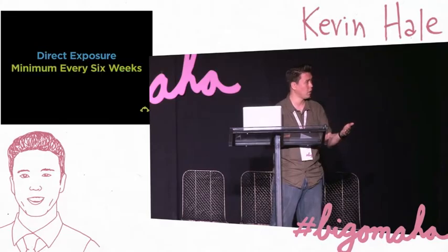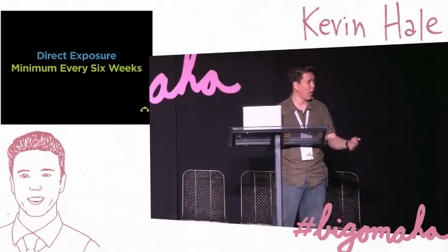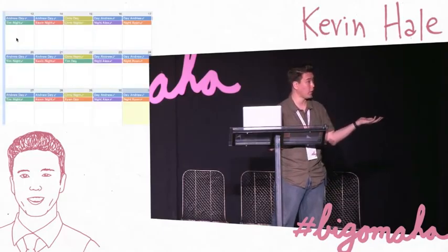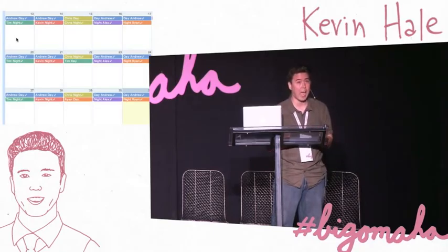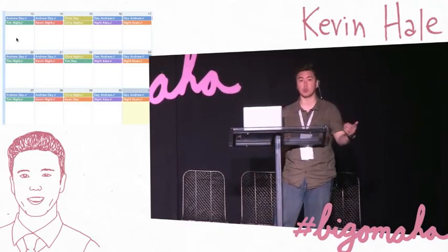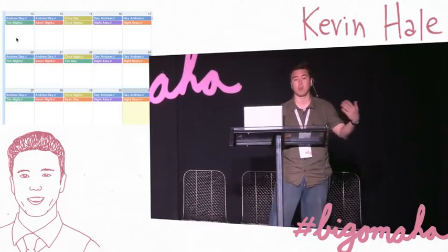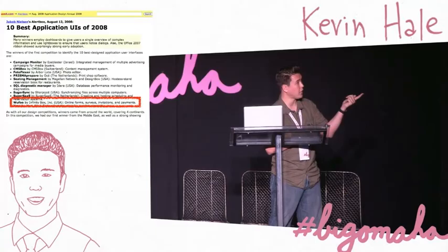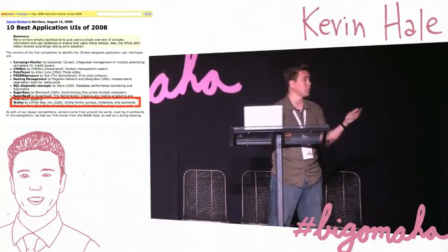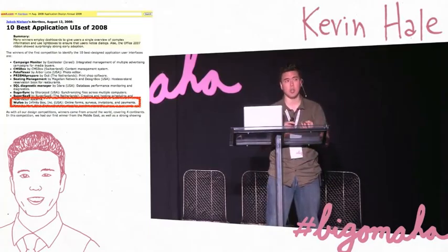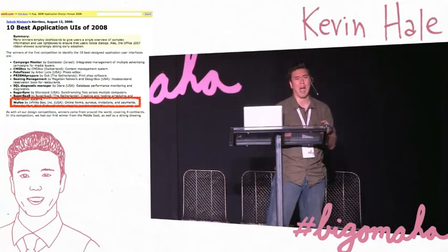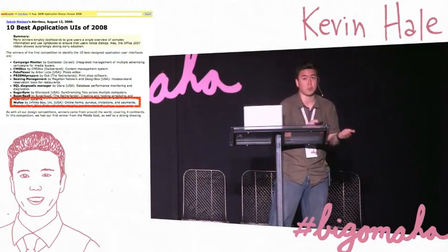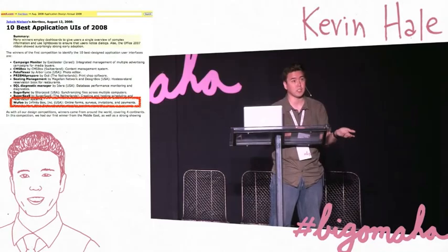You had to be speaking with customers one-on-one — not through a window, not through a screencast, not through analytics. It had to be a minimum of every six weeks, otherwise you start losing the value, and at least two hours per interaction. In our company, engineers spent four to six hours every single week doing customer support, and we cycled weekends so engineers rotated weekend support every six weeks. This resulted in pretty good software. When we were only four people, Jacob Nielsen awarded Wufoo one of the best application UIs in 2008. We were competing against enterprise-level teams with 30 to 40 people and dedicated UX eye-tracking software suites. We did better than them simply because we always had direct access to customers and kept our pulse on what was causing them pain, fixing it as quickly as possible.